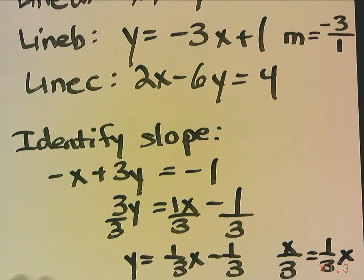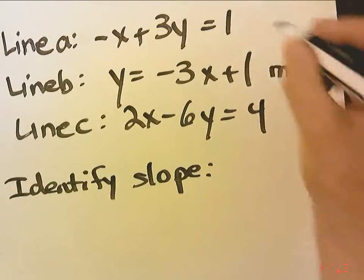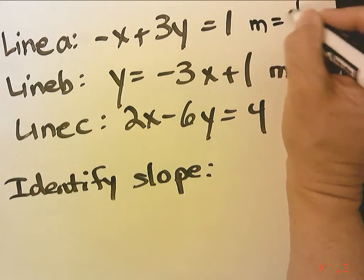Okay, so my slope for the first line, line A, is 1 third. So let me add m equals 1 third.